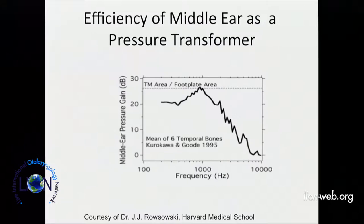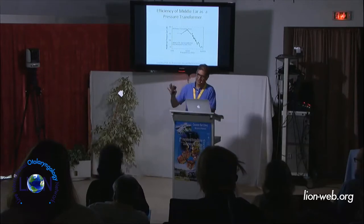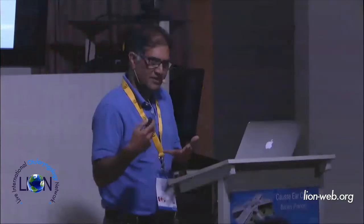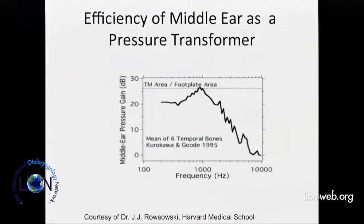If you look at the pressure gain of the middle ear — this is a Kurokawa and Goode study from 1995 — if you take the eardrum and see how much pressure you need to drive the inner ear, at low frequencies it's pretty efficient, giving about 20–25 dB gain. Up to about 1,000 Hz it moves like a piston and you get the expected 26 dB gain. At high frequencies it becomes more and more inefficient, with not much pressure gain.